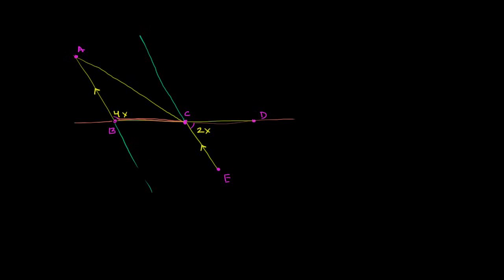So if this angle right over here is 4x, it has a corresponding angle where the transversal intersects the other parallel line. Most of the work here is identifying the parallel lines, the transversal, and the useful angle relationships. That right there is the transversal; those are the parallel lines. The corresponding angle is also 4x.